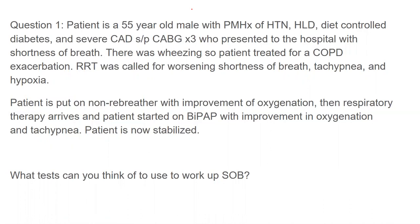This patient's oxygen is up, they're on BiPAP, they've improved. What tests can you think of to work up shortness of breath on the floor? ABG — always get an ABG. The difference between an ABG and a VBG: ABGs are helpful because they tell you oxygen status; VBGs can't do that. ABGs are also much more accurate for CO2, and the higher the patient's CO2, the less accurate a VBG is.